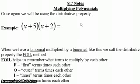In section 8.7, we're going to be multiplying polynomials together. We're going to focus mostly on multiplying a binomial times a binomial, but we will mix it up and include some trinomials as well. When you're doing this, it's basically the distributive property.